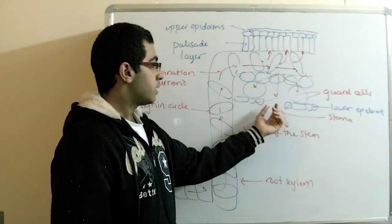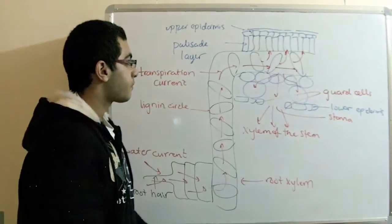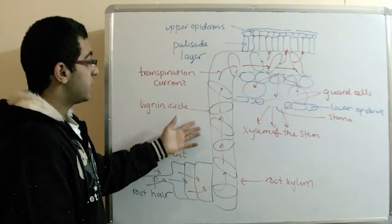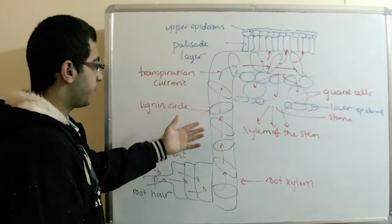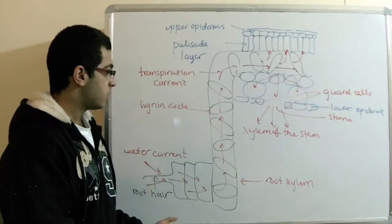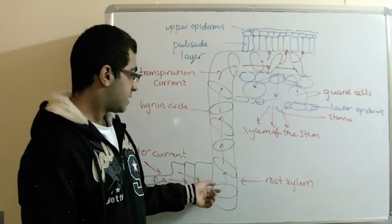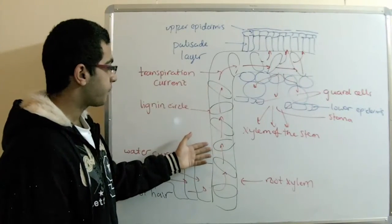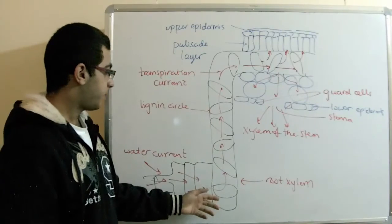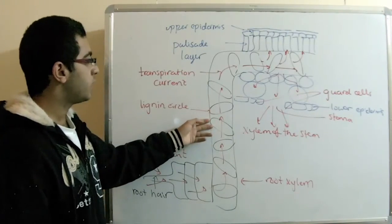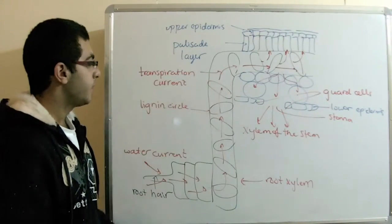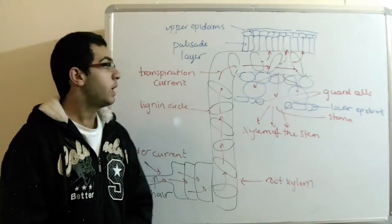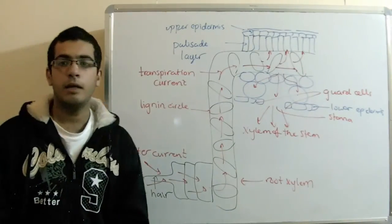But how does the water ascend through this height in the plant — how does the water ascend from the root xylem to the stem xylem to the leaves? How can the water get up this height? That's what we'll cover next time. Thank you for watching and see you next time.